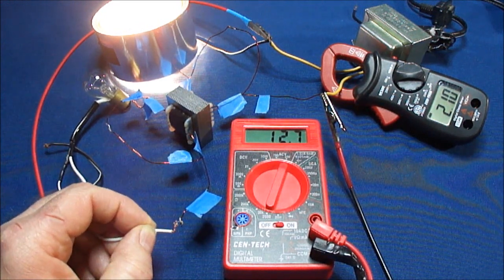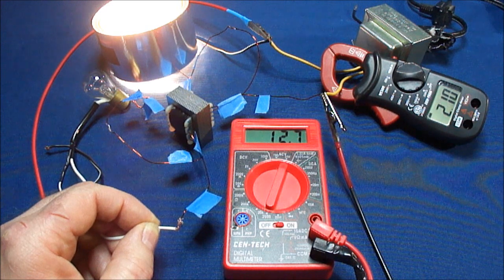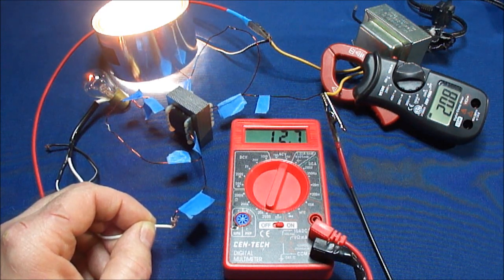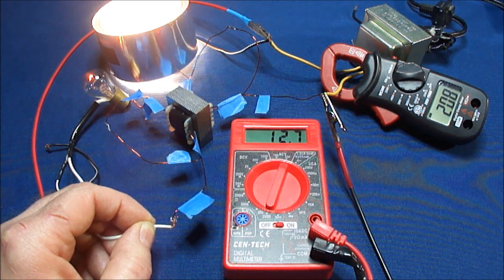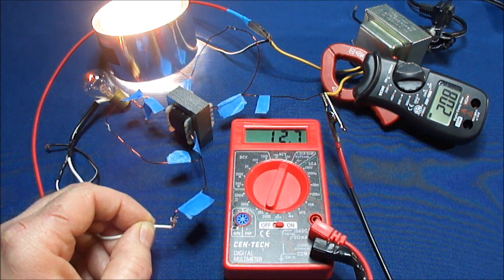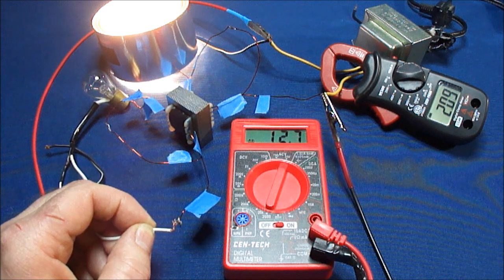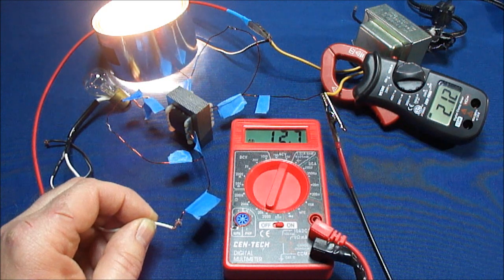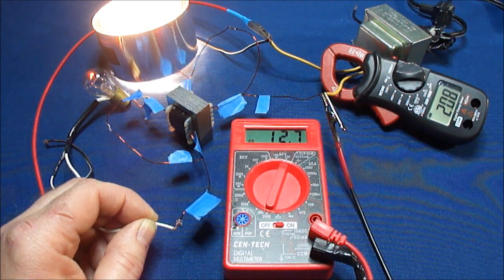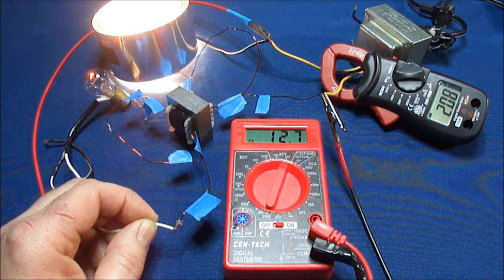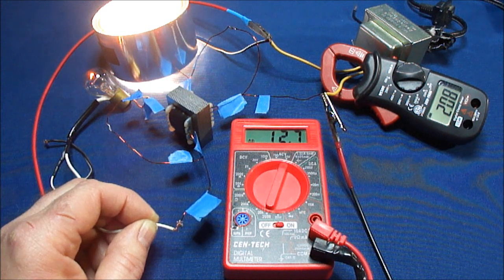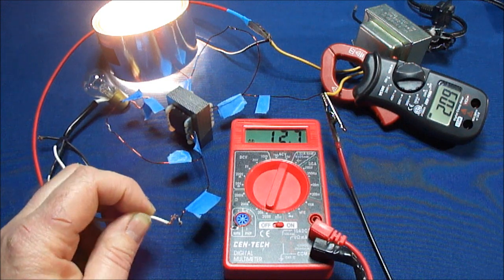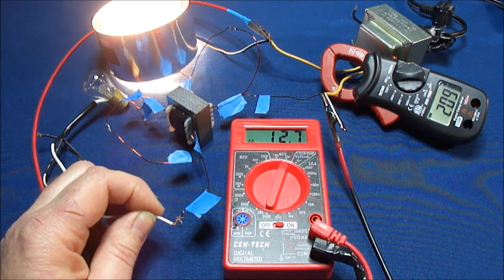Notice what happens when I connect the load on the secondary. The meter and the amps are both connected on the primary. Instead of the amps going up they are going down. All transformers I know when you connect the secondary the current is supposed to increase in the primary.